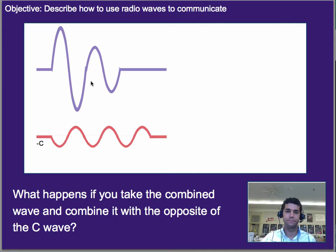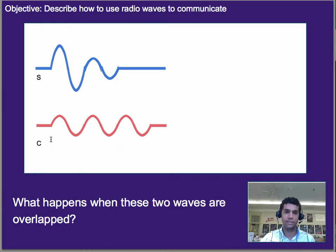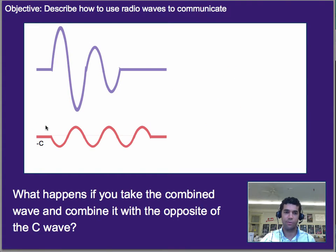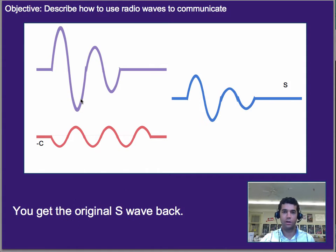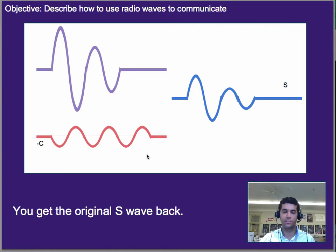So they combine. Now, if instead we took that bigger wave and combined it with the opposite of our previous C wave — a negative version of it — then what happens is we can get back to our original S wave. So we've got this idea that we can add a wave in and then also remove a wave out in terms of superposition. That'll be important for later on with communication.